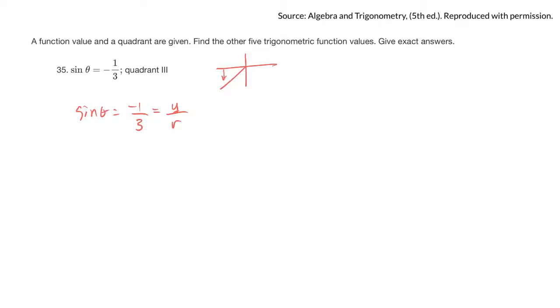So if I know y and r, I can do the same thing as the last question. Use this formula to figure out the one that I don't know. So y is negative 1, r is 3, and x I don't know. So x squared plus 1 equals 9. x squared equals 8. And x equals plus or minus root 8. Now 8 is 4 times 2, so I'll probably write that as 2 root 2 as x.